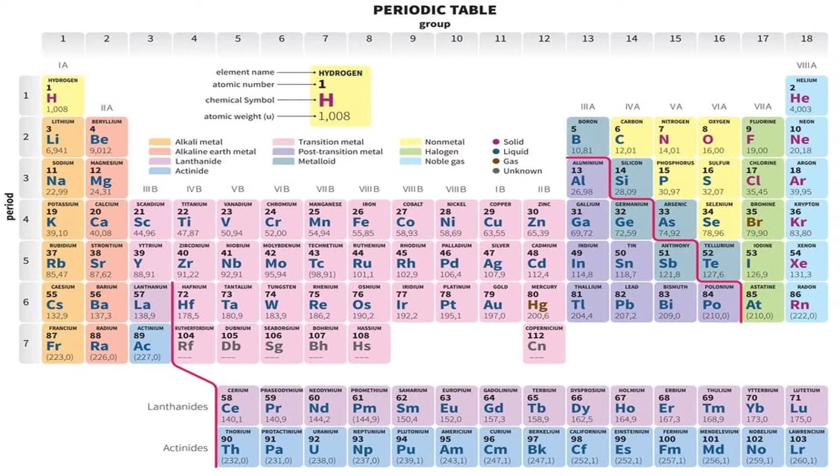Based on record, there are at least 118 elements and around 90 of those are naturally occurring or can be found in nature. These elements were listed and arranged into a table called the periodic table of elements and this is how it looks like. In a periodic table, there is the period and the group.